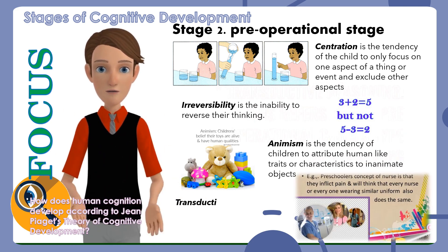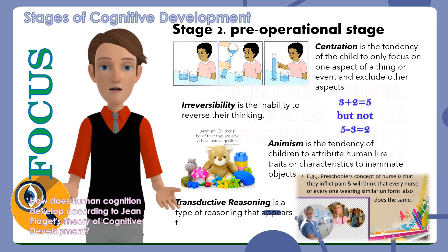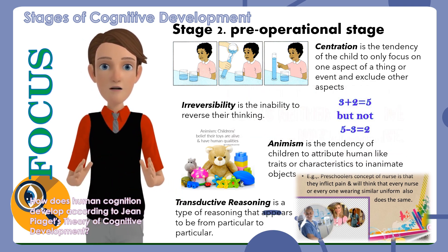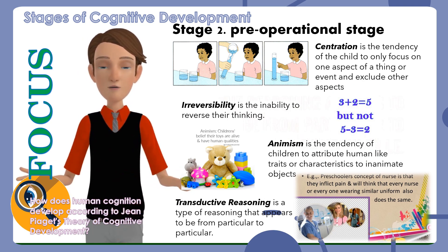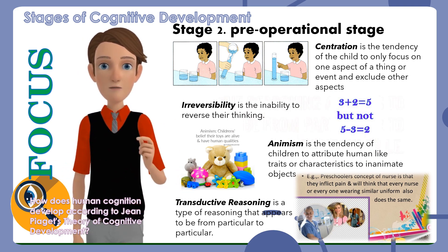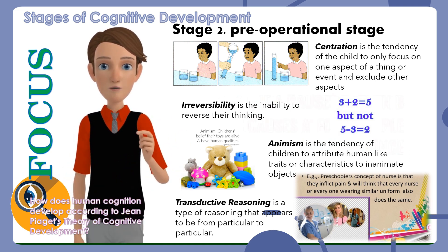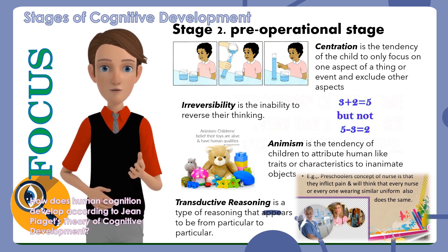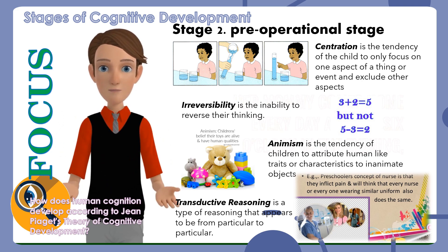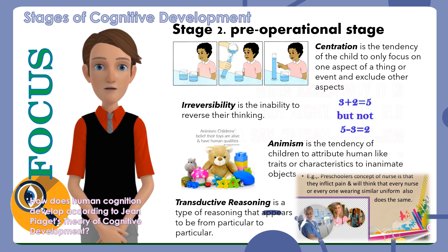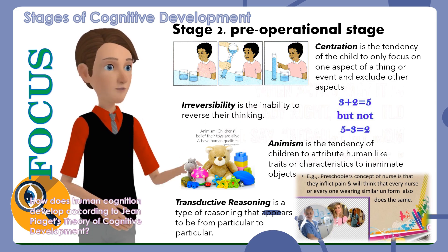Transductive reasoning: This refers to the pre-operational child's type of reasoning that is neither inductive nor deductive. The reasoning appears to go from particular to particular — if A causes B, then B causes A. For example, since her mommy comes home every day around 6 o'clock in the evening, when asked why it is already night, the child will say, 'Because my mom is already home.'